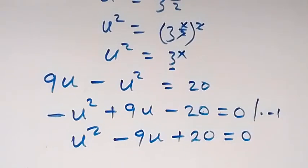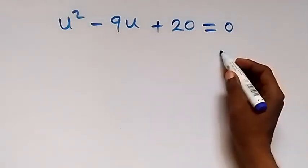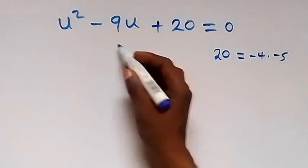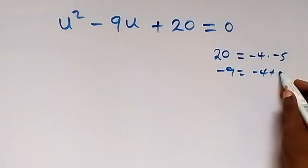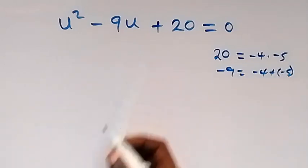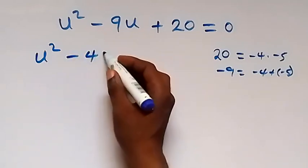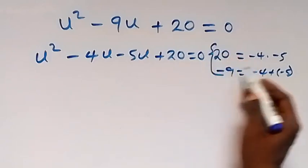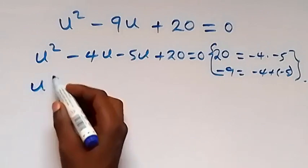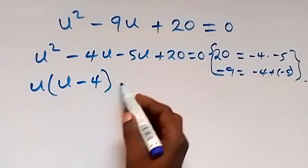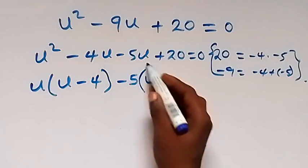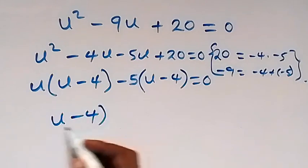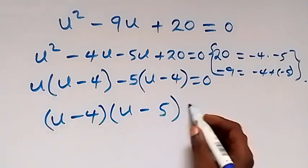We solve this quadratic equation using the factorization method. 20 is the product, which can be written as minus 4 times minus 5, and the sum is minus 9, which is minus 4 plus minus 5. So we rewrite as u squared minus 4u minus 5u plus 20 equals 0. Grouping: u into bracket u minus 4, then minus 5 into bracket u minus 4, equals 0. Factoring out the common term, we get u minus 4 times u minus 5 equals 0.